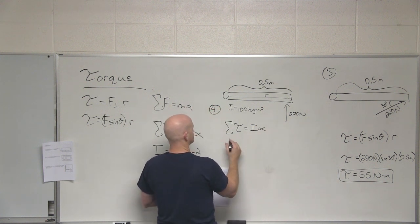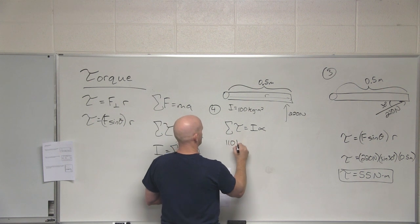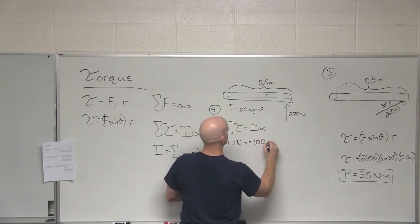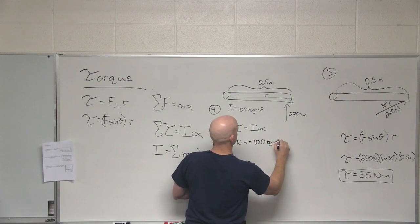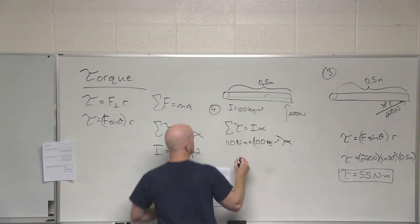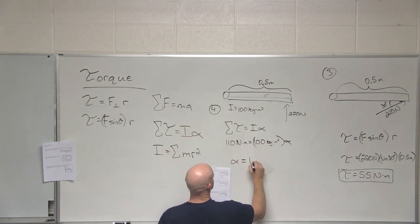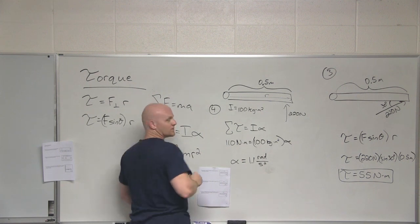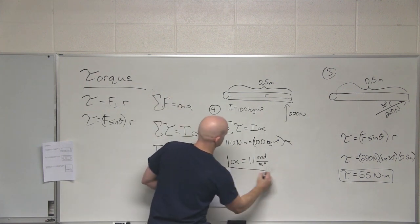And what was our torque in this case? Yeah, 110. So 110 equals 100 times alpha, which gives us 1.1 radians per second squared.